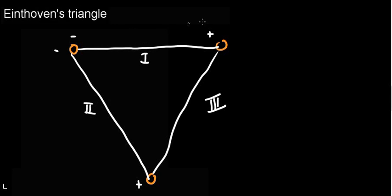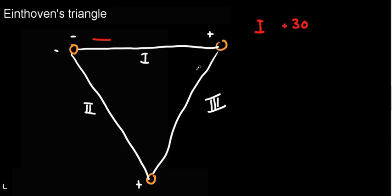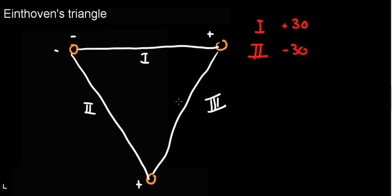If on lead one I have a plus 30 — that means electrons are going in that direction. And if I have on lead two minus 30 — it means that electrons are moving in that direction.